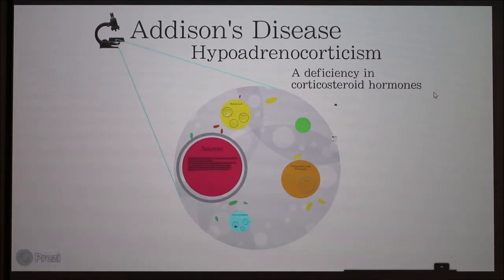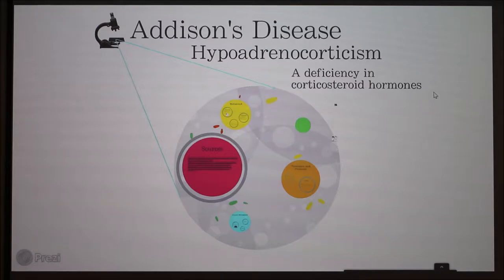Today I'm discussing Addison's disease, which is more formally known as hypoadrenocorticism. It's a deficiency in corticosteroid hormones.